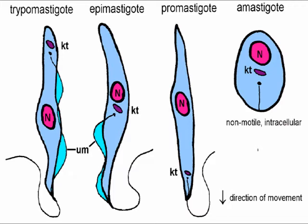The epimastigote has the kinetoplast beside the nucleus. The trypomastigote has the kinetoplast and basal body of the flagellum behind the nucleus. The three stages — promastigote, epimastigote, and trypomastigote — are extracellular parasites.